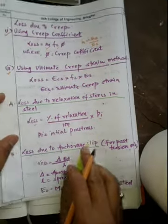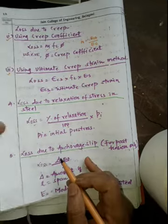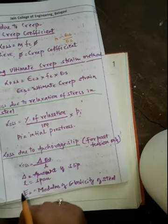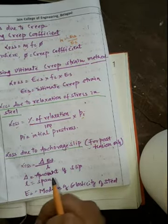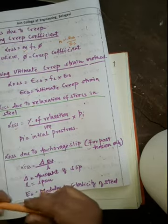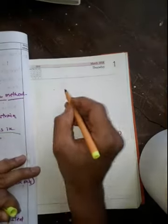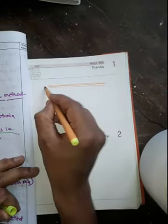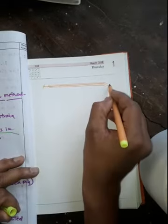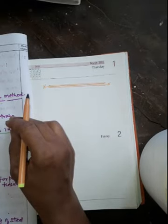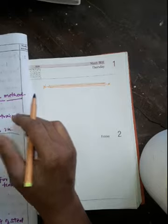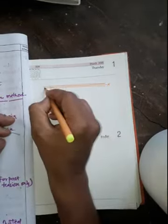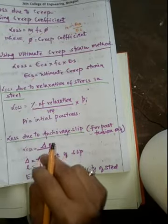The next loss is loss due to anchorage slip, and this applies only to post-tension systems since pre-tension does not use an anchorage system. In post-tension, the cable is passed through a duct and anchored at the ends. During the locking process, because of some error or cause, there will be slip of the tendon from the anchorage, and whatever tension was given in the cable will be lost.